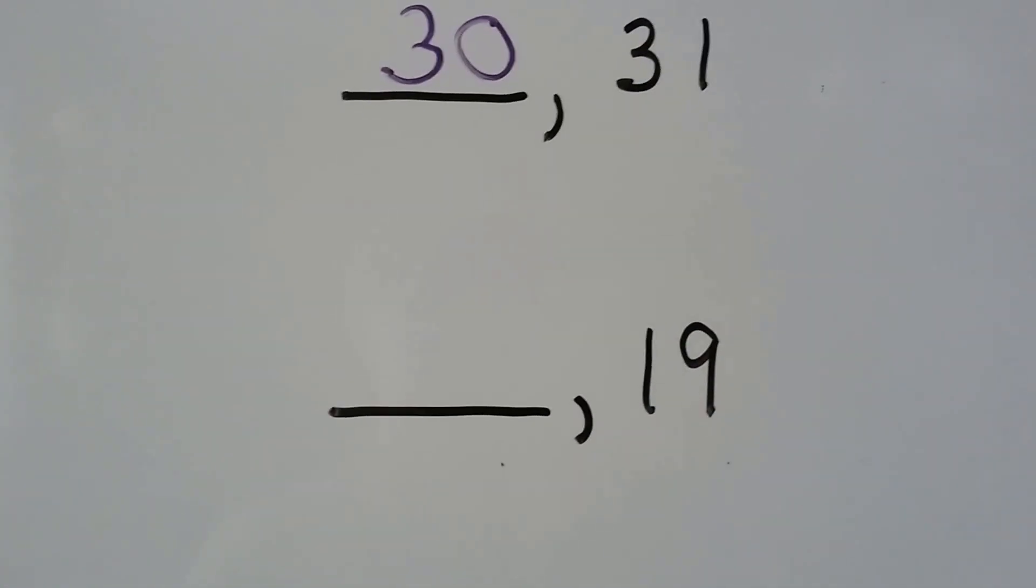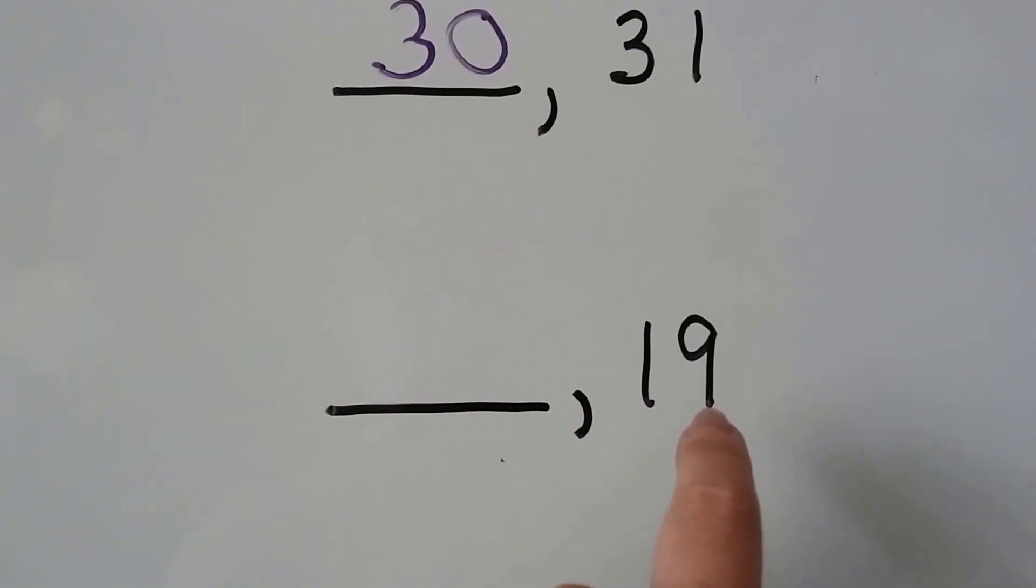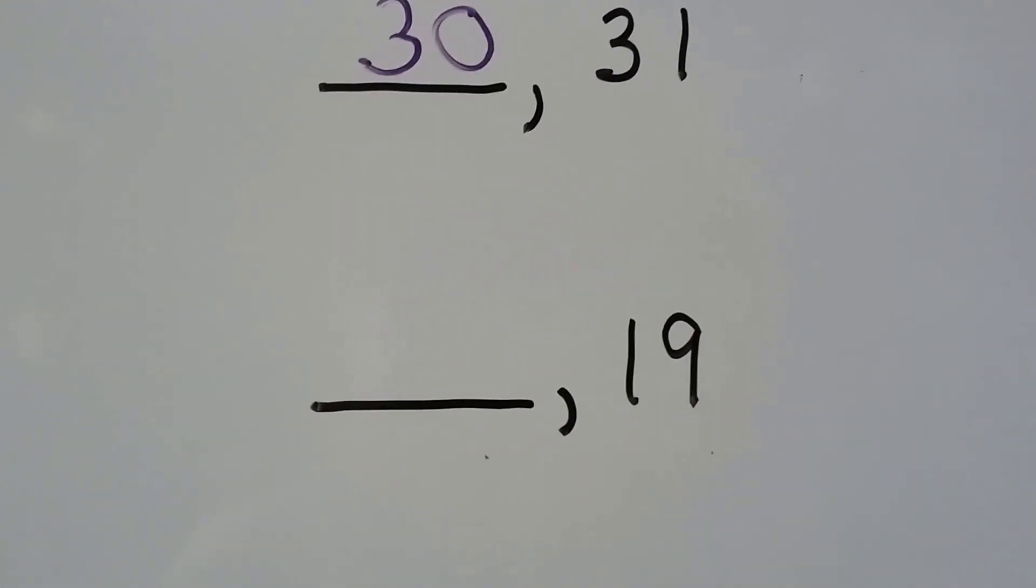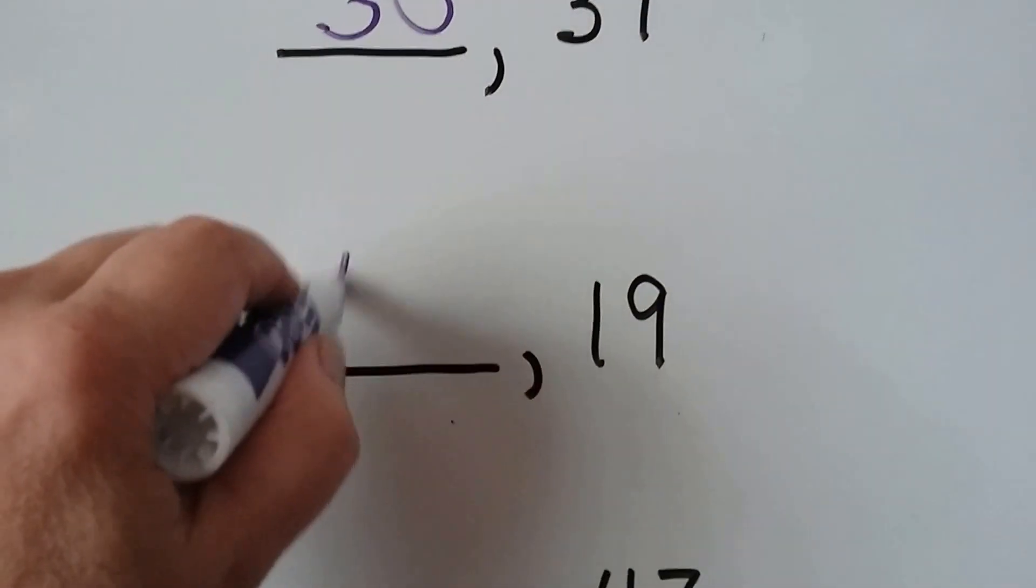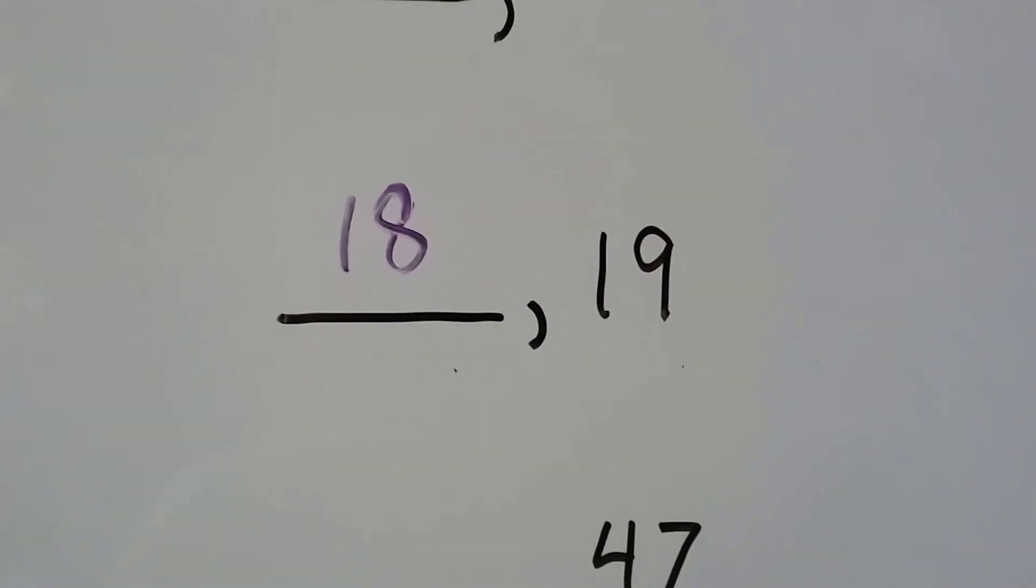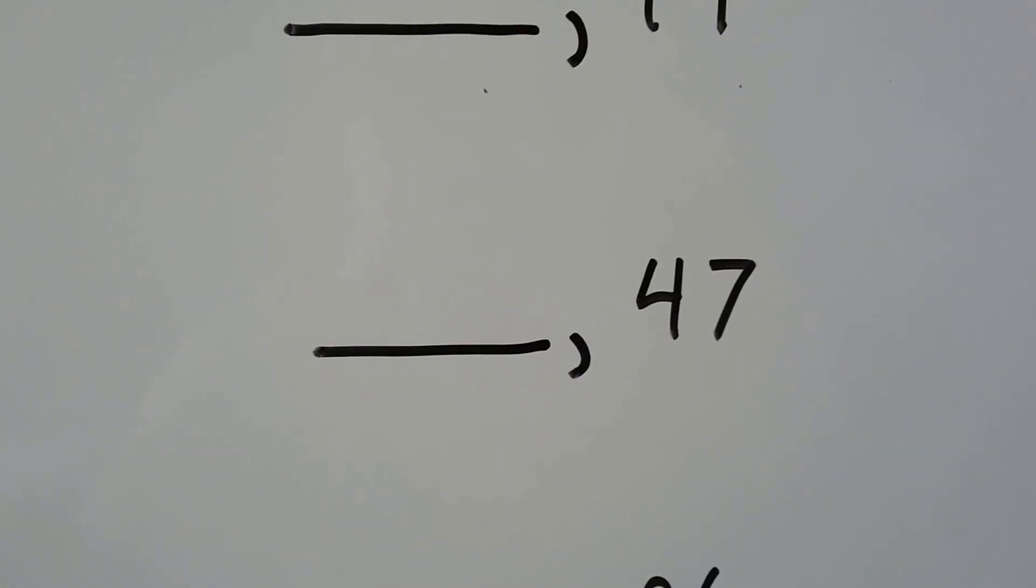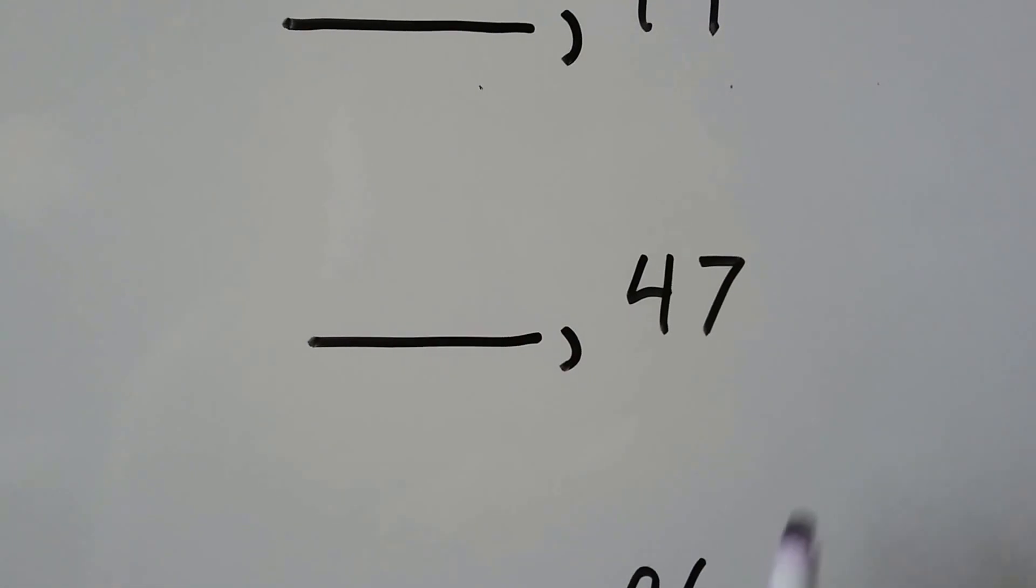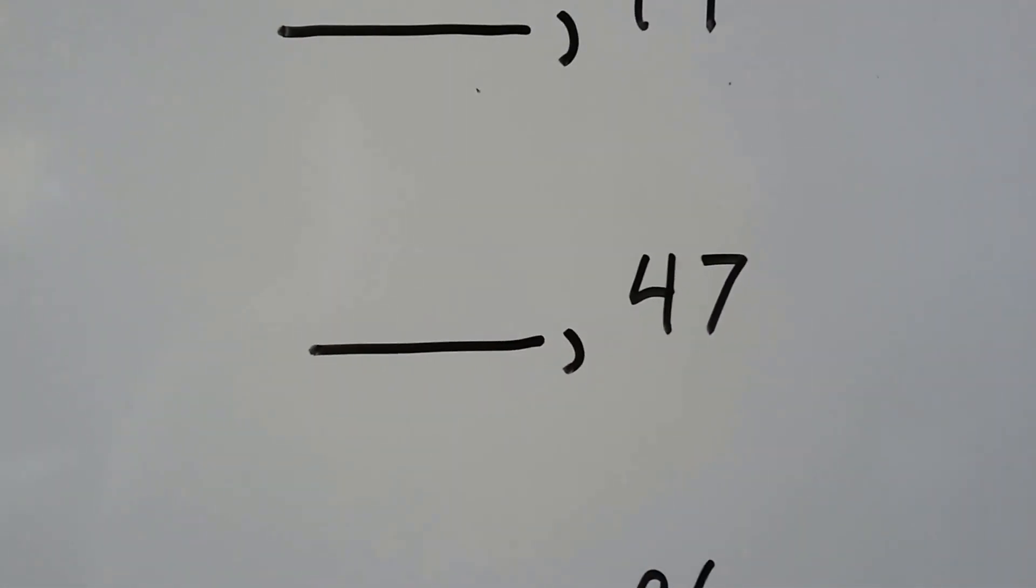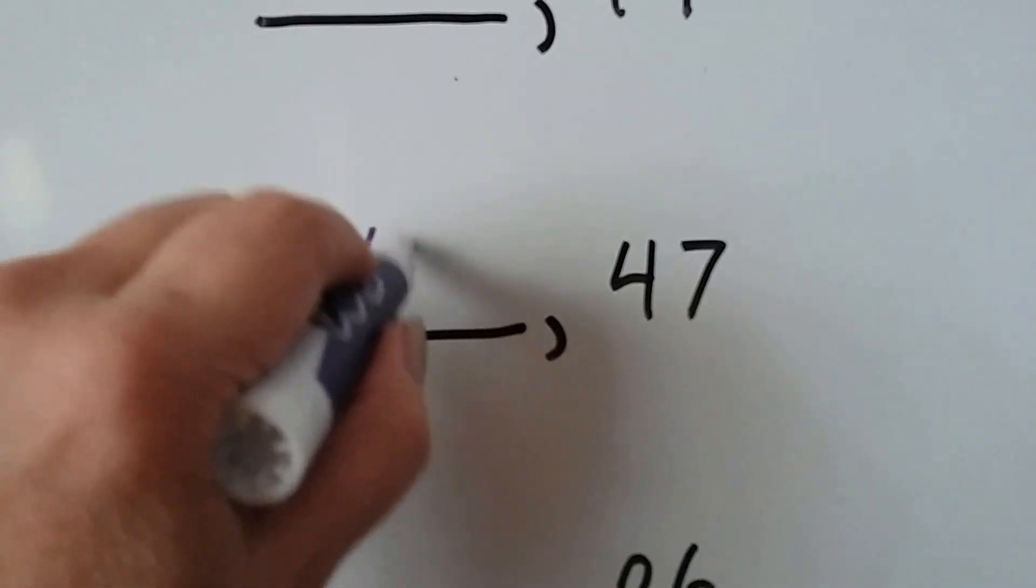What number comes before 19? What number has one less one than nine? If you said 18, you're right. That has one less one than 19. What comes before 47? What is one less than 47? If you said 46, you're right.